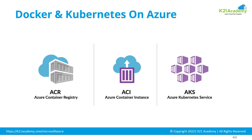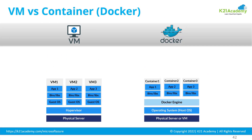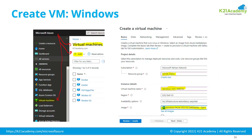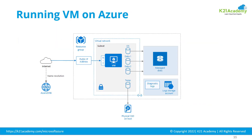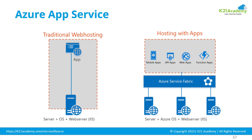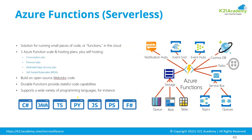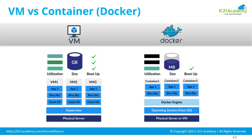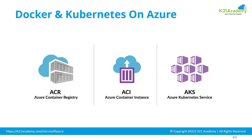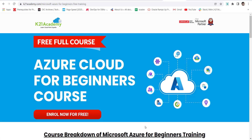To recap, the compute options on Azure are: first, Virtual Machines; second, App Services, also called Web Apps, which is HTTP-based hosting for different types of applications; third, Functions and Logic Apps; and fourth, Containers and Kubernetes on Azure, which is Azure Container Instance and Azure Kubernetes Service. In the next lesson we'll be looking at networking.